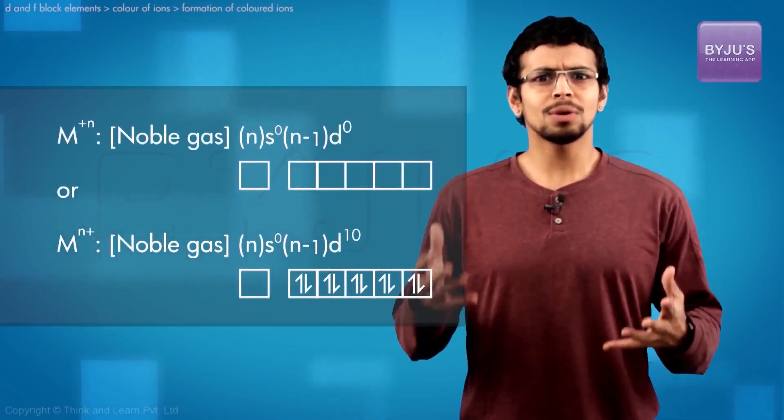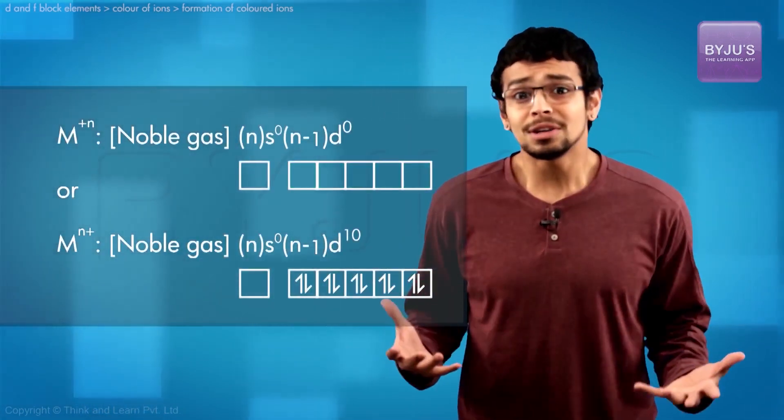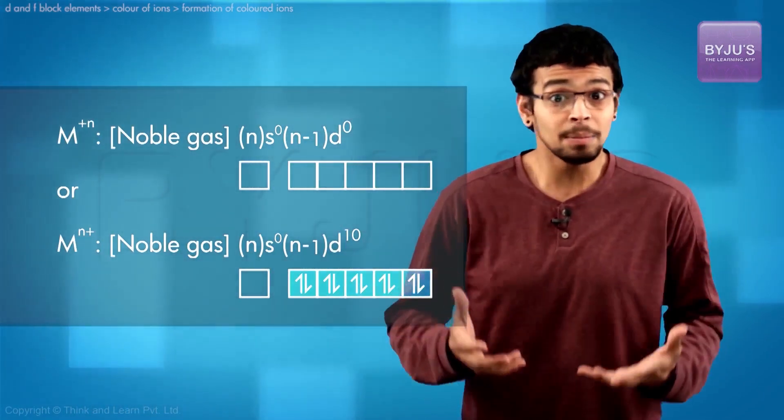Now it must become evident to you that if there are no electrons in the d orbitals or all the d orbitals are completely filled, paired up with electrons, such reorganizations don't happen which can lead to promotion of electrons. And we will have colorless substances.